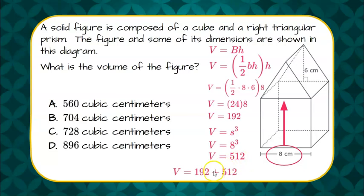And now we need to put the two volumes together. 192 plus 512 is 704, giving us an answer of B.